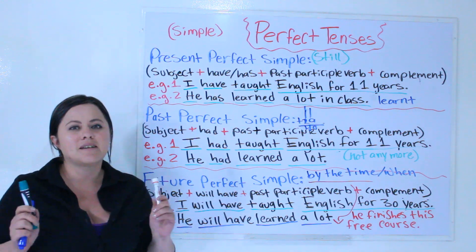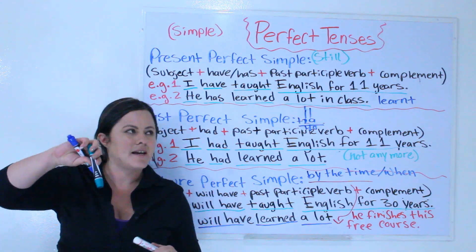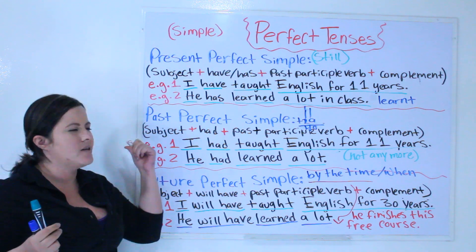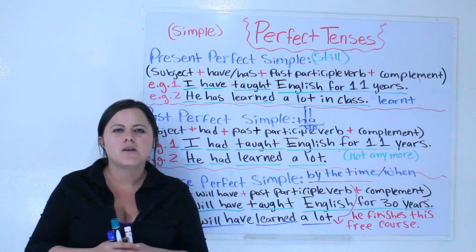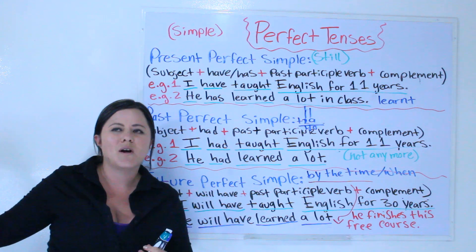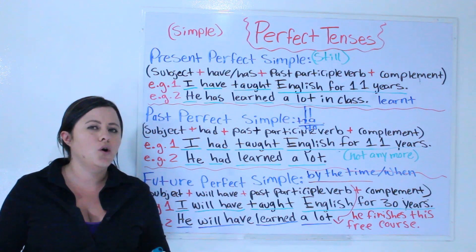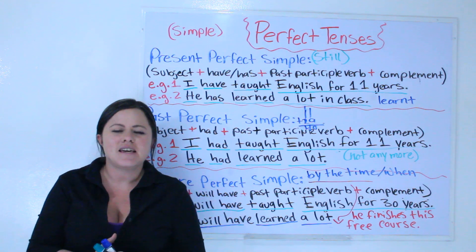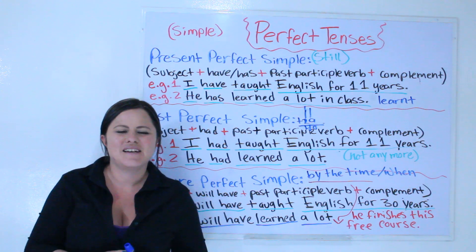Let's make it clear again. Present perfect simple: something you did in the past and you still do today. Past perfect simple: something you did and you don't do anymore. Future perfect simple: something you will have done by the time something else happens — for example, when I turn 50, I think I will have made over a thousand videos. Thank you very much for watching — remember to subscribe so I can keep teaching you for free.